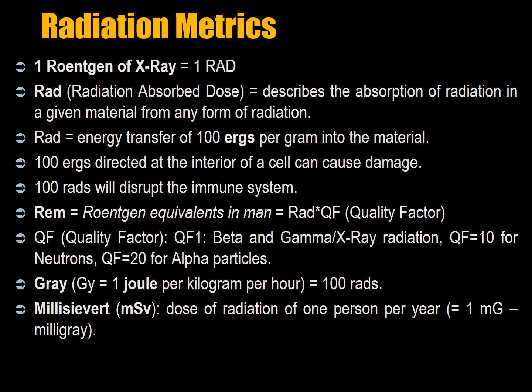These are some metrics you should be familiar with because they occur routinely in the literature and are used by different agencies for different purposes, but they essentially measure the same thing. There's the RAD — the Roentgen of X-ray — which is the radiation absorbed dose. It describes the absorption of radiation in a given material from any form of radiation, so it's very general. A RAD is equal to the energy transfer of 100 ergs per gram into the material, so you're looking at very different levels of energy between X-ray, gamma, and neutrons.